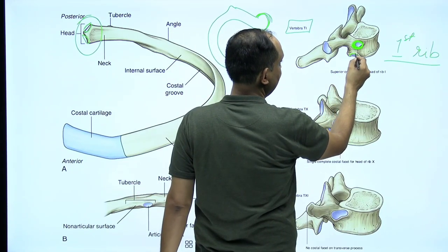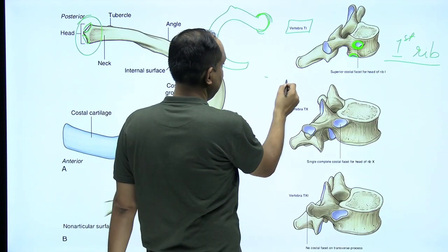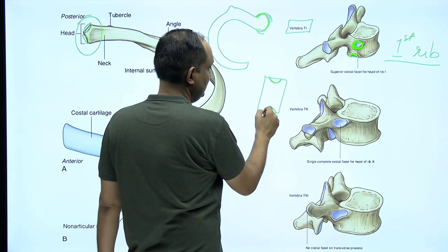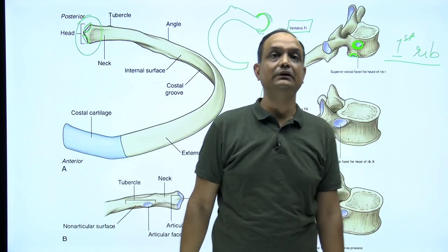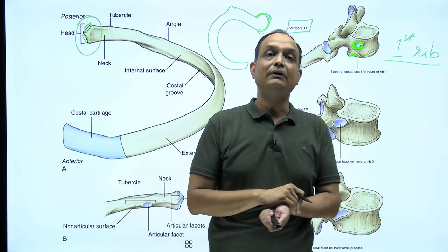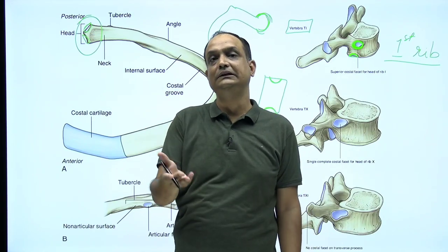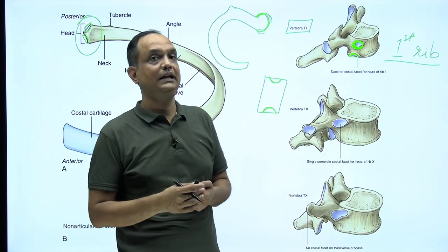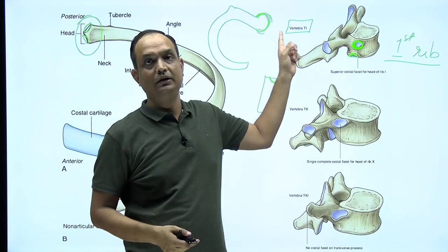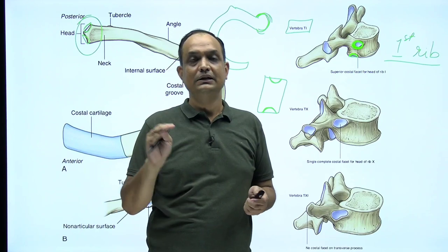On the lower border of T1 there is a demi-facet for the second rib. For typical thoracic vertebrae, the body has demi-facets on both its upper and lower parts. The key point is that a typical rib has two facets on its head, which articulate with demi-facets on adjacent vertebrae, while the first rib has a single undivided head articulating with T1 only — meaning T1 has no articulation with C7.